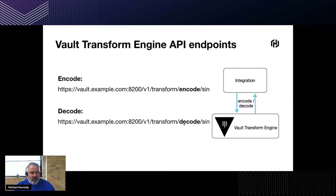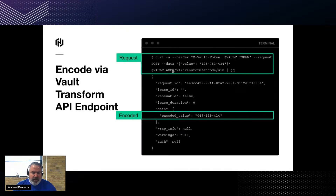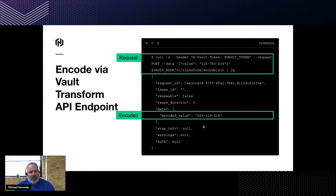Same with the decode endpoint. This is most typically what you'll be doing on the integration platform — you make the request, provide the token, provide the data, and you get a response with the encoded value in your JSON response. You marshal that and replace the values as required on the integration platform.